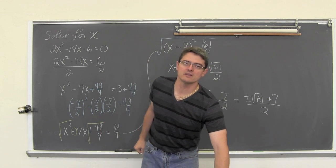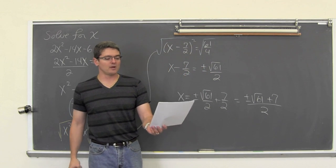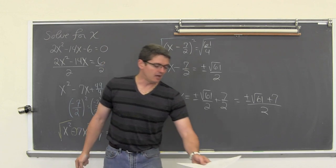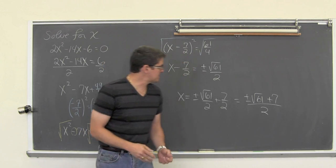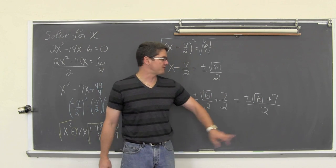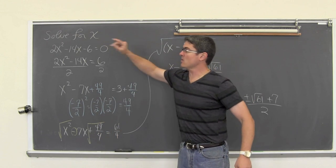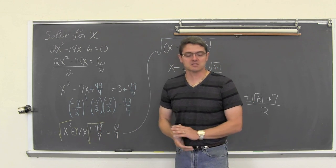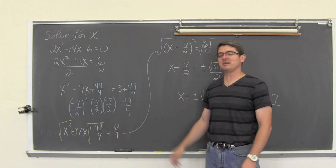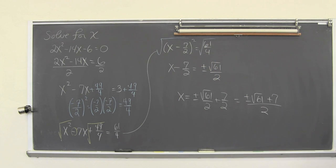By the way, the decimal answers to that previous question were approximately 0.9 and negative 8.1. This exact form represents where the parabola crosses the x-axis. I am Mr. Tarrou. This is Completing the Square. BAM! Go do your homework!